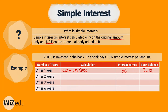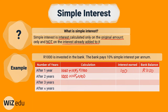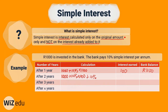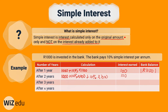How would this look after two years? After two years, we'd still have the 1,000 Rand we initially invested. We'd have the 10% from year one as interest, and also another 10% for year two, also multiplied by 1,000 Rand. For simple interest, we calculate interest only on the original amount and not on the interest already added to it, so we wouldn't multiply by 1,100 — we'd use the original. We'd earn only 100 Rand in year two, bringing our bank balance to 1,200 Rand.